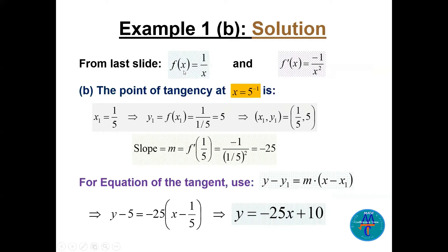For part b: f(x) = 1/x and f prime = minus 1/x². The point of tangency is x = 5⁻¹ = 1/5, so x₁ = 1/5. Then y₁ = f(1/5) = 5, giving the point (1/5, 5). The slope is m = f prime(1/5), so we square 1/5 giving minus 25. Using y minus y₁ = m(x minus x₁) with these values gives the equation of the tangent line.